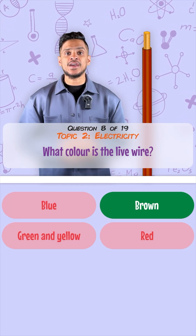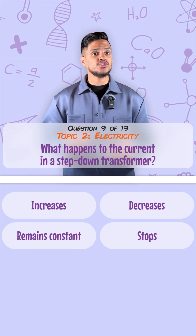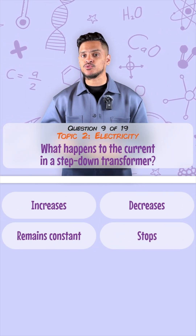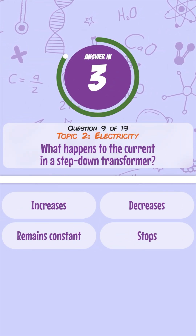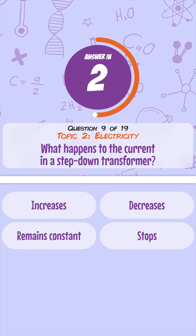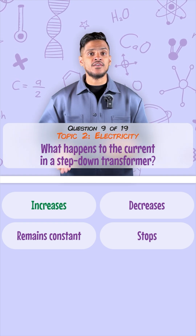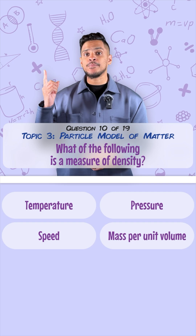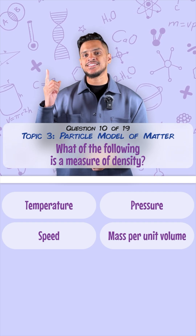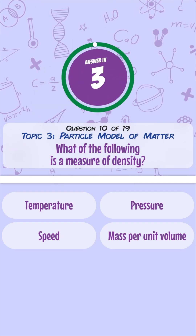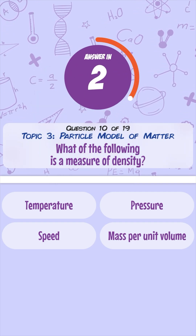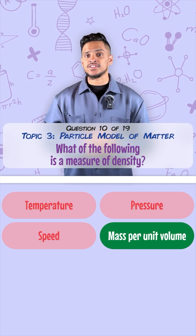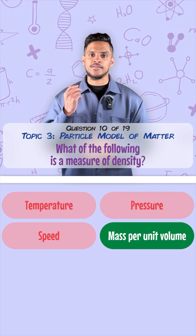What color is the live wire? The live wire is brown. What happens to current in a step-down transformer? Current increases. Which of the following is a measure for density? It's basically the mass of a substance per unit volume.